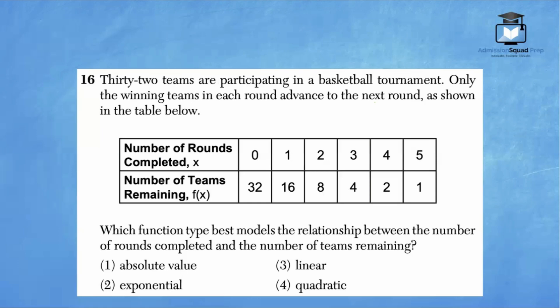Which function type best models the relationship between the number of rounds completed and the number of teams remaining? Let's evaluate the behavior of the numbers here. Our x values seem to be increasing by 1. So that's pretty standard, and it's going to help us to isolate the behavior of the y values.